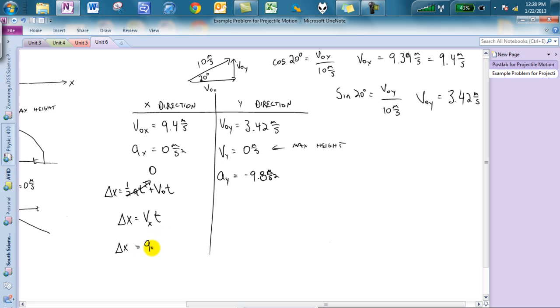And you'll notice that delta x is going to be how far the object moves in the x direction. Vx, we do know, which is 9.4 meters per second. And the problem is, we have two unknowns. We don't know time for this. And so when we get into this situation, we're like, we don't know time. Guess where we want to get time? We want to get time from the y direction.